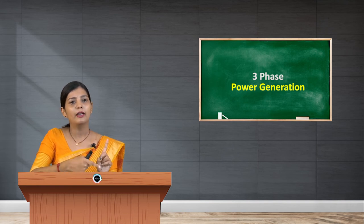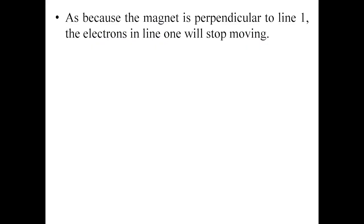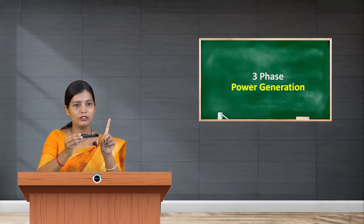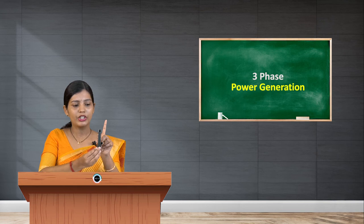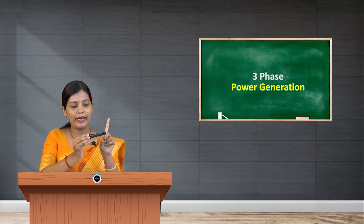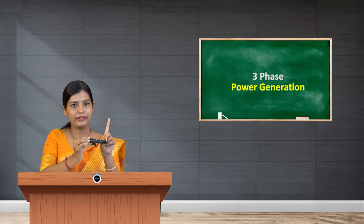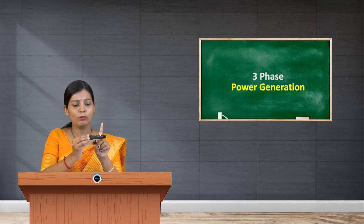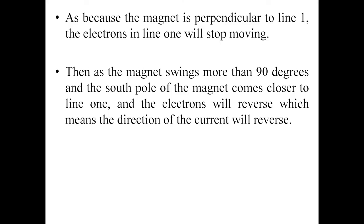We know that it is continuously rotating. What happens when the magnet swings to 90 degrees? Because the magnet is perpendicular to Line 1, the electrons in Line 1 will stop moving. Initially it was in this position and it moves to 90 degrees. When both are perpendicular to each other, the electrons will stop moving.